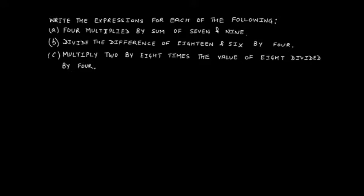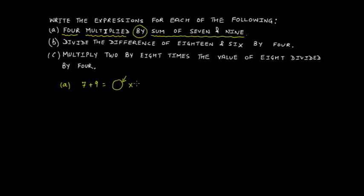Let's jump to the first one. Statement A says: 4 multiplied by the sum of 7 and 9. That is, you first add 7 and 9, and whatever value you get from this addition, you multiply it by 4. Therefore, the mathematical expression is 4 multiplied by (7 plus 9). You can also write it as (7 plus 9) multiplied by 4 — both expressions are the same.